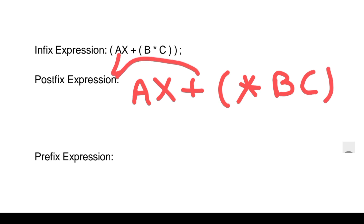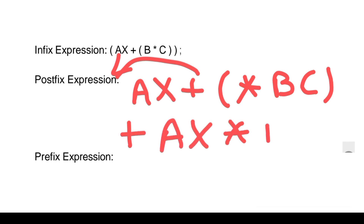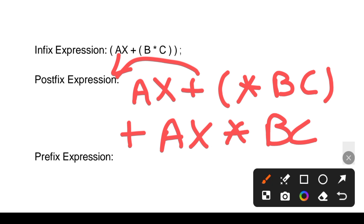What we have to do is first follow the parenthesis — we have solved the parenthesis, it has shifted. The next time we have the second operator plus, which is shifted to the front. So the prefix expression becomes: + A X * B C. This is the prefix expression.